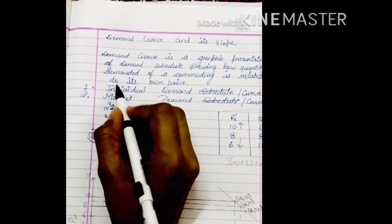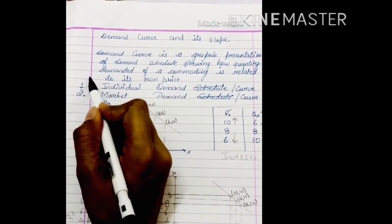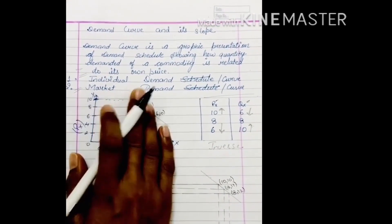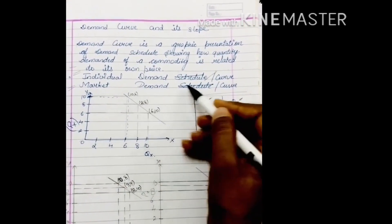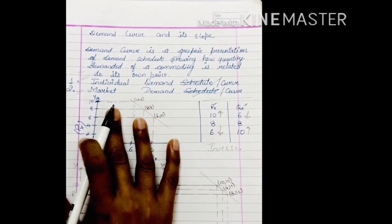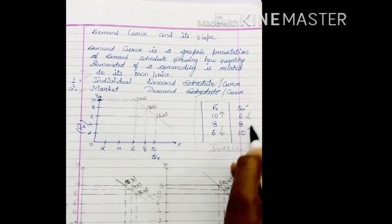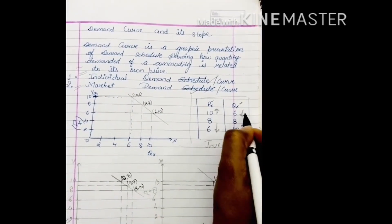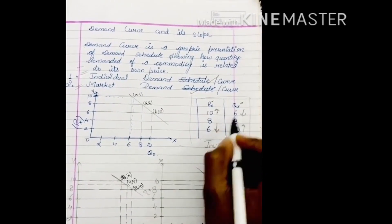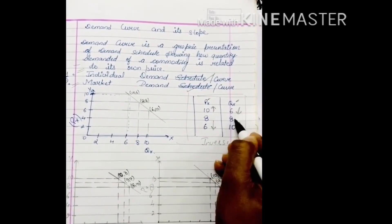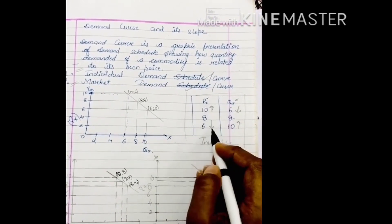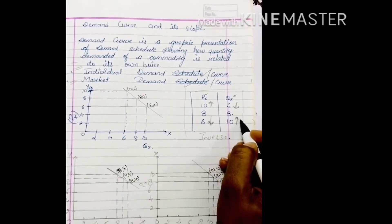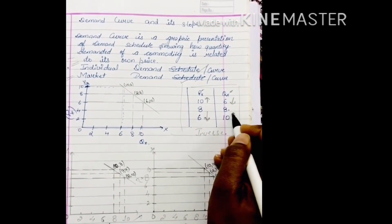The demand curve has two parts: one is the individual demand curve and the other is the market demand curve — same as individual demand schedule and market demand schedule. For the individual demand curve, I have drawn an example: if the price is 10 rupees then quantity demanded is 6 units; if price is 8 rupees then quantity demanded is 8 units; if price falls to 6 rupees then quantity demanded is 10 units.